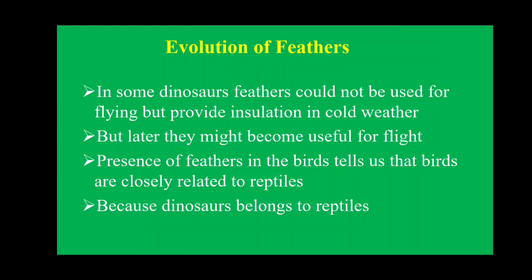Dinosaurs had the same feather structure as birds, but dinosaurs did not use feathers for flying — they used them to protect from cold weather. The evolution of dinosaurs may have led to birds, which now use feathers for flying. Since dinosaurs belong to the reptiles, and birds have features like dinosaurs, we can say the ancestors of birds may be reptiles. The presence of feathers in birds tells us that birds are closely related to reptiles.